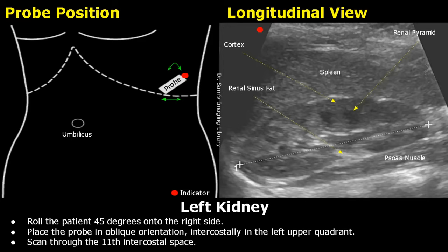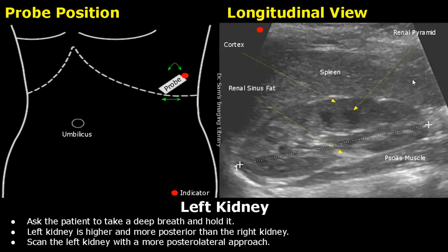Now we will see how to scan the left kidney. First, roll the patient 45 degrees to the right side. Then place the probe in oblique orientation through the lower rib spaces for an intercostal approach. The 11th intercostal space is a good landmark to locate the left kidney. Ask the patient to take a deep breath and hold it. The left kidney is higher and more posterior than the right kidney, so try a more posterolateral approach.